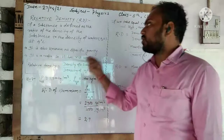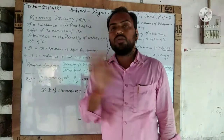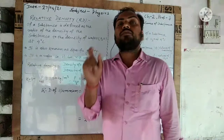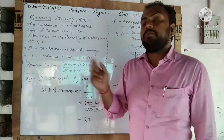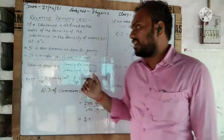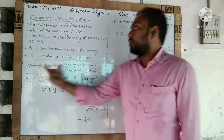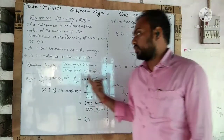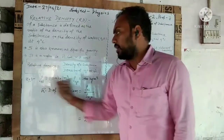Since relative density is a ratio, it has no unit. Relative density has no unit because it is the ratio of the density of two substances — density divided by density — so the units cancel out and it becomes a pure number. The formula is: relative density = density of substance divided by density of water at four degrees Celsius.